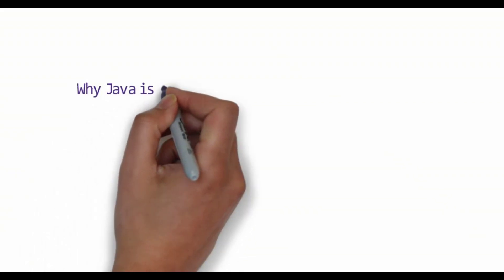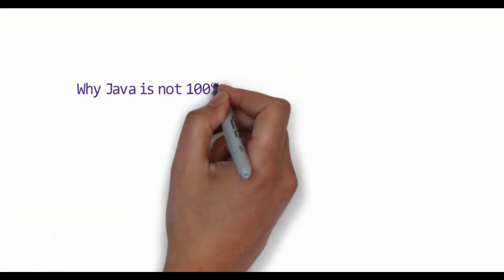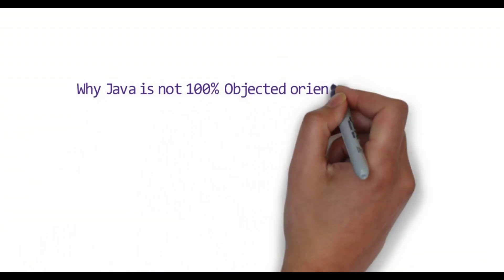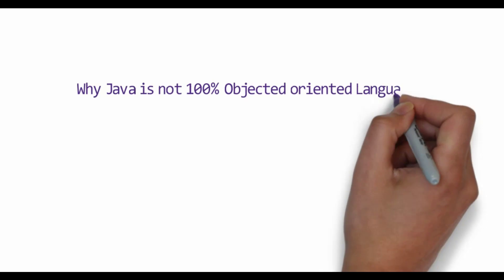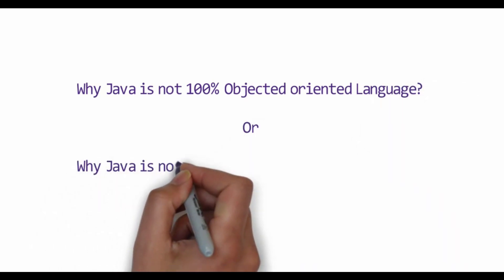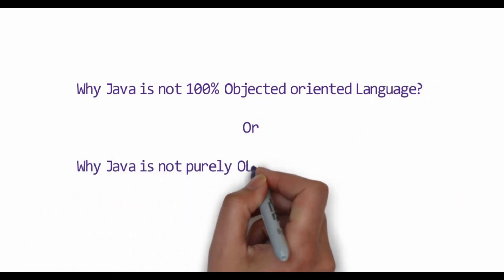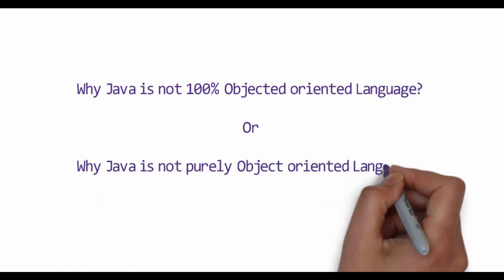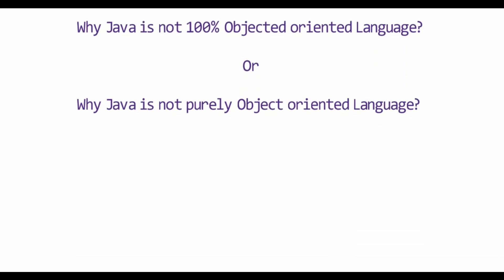Why is Java not 100% object-oriented, or why is Java not a purely object-oriented language? This is the most favorite interview question for freshers.